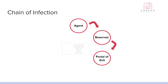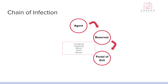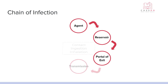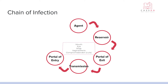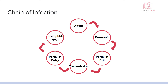Then it's going to figure out how to exit that reservoir — it's going to have a portal of exit. For something like COVID, for example, that can be sneezing and then it can be in the air droplets. Then we've got the transmission and how it goes from one person to another. The portal of entry is how it's going to get inside a susceptible host. Bacteria and viruses can get inside a human but the body can fight it off before we have any symptoms or illness, so that person has to be susceptible.